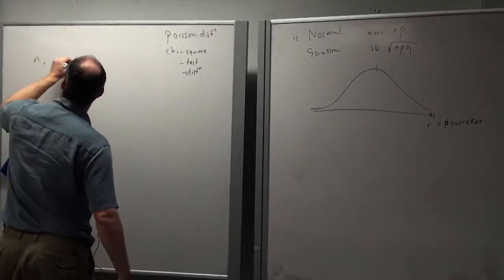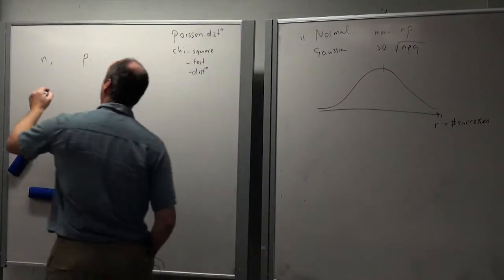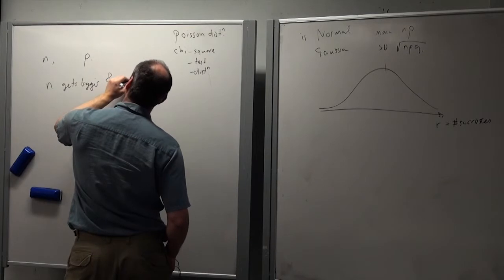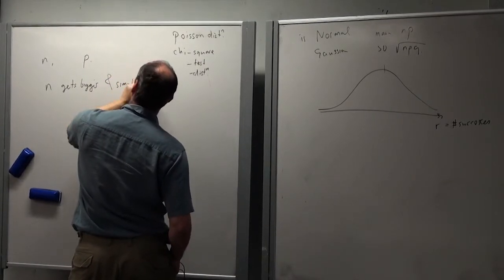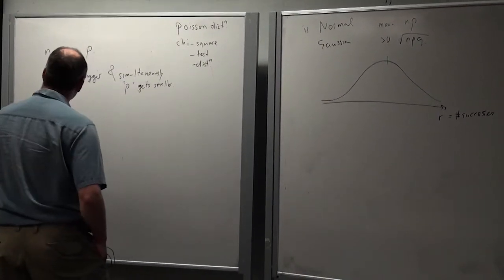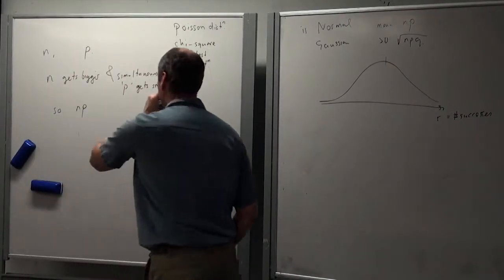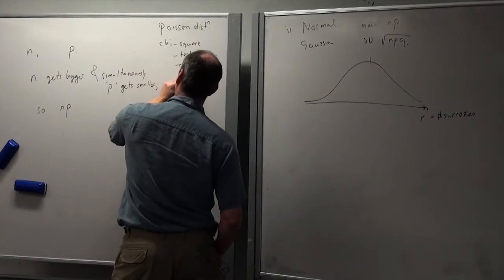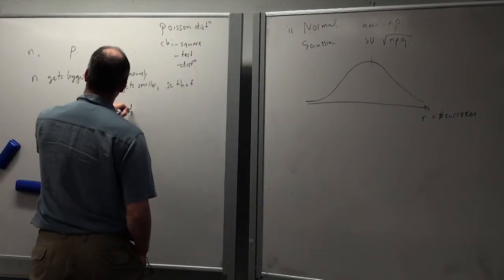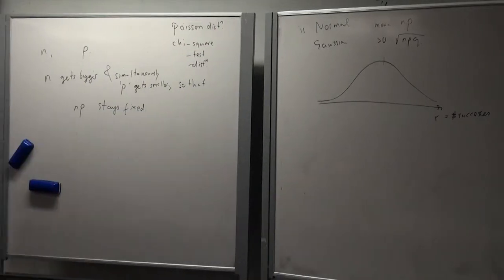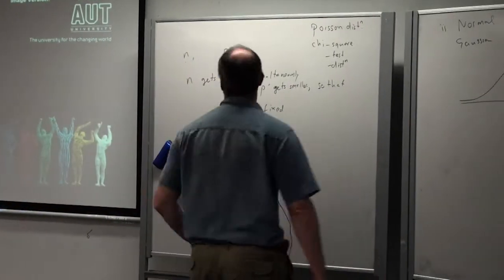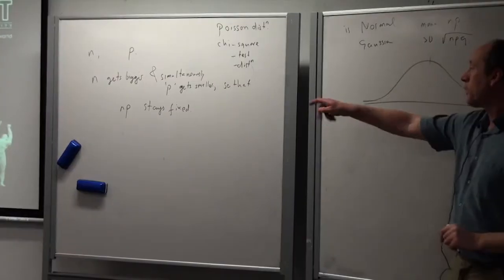What I'm going to do now is think about the two parameters, N and P. And I'm going to consider a sequence where N gets bigger and simultaneously P gets smaller, so NP in such a way that NP stays fixed. So, last time we looked at N getting larger and P staying at 0.3 or 0.1 or whatever it was. And now I'm going to vary both of these parameters, number of trials and the probability of success, in such a way that the product NP stays fixed.